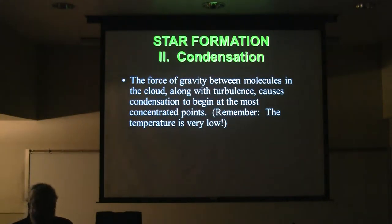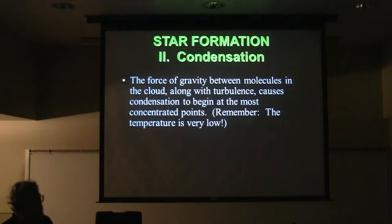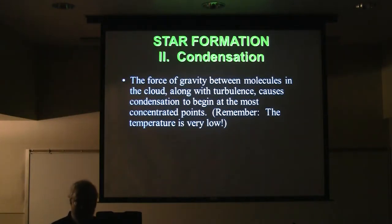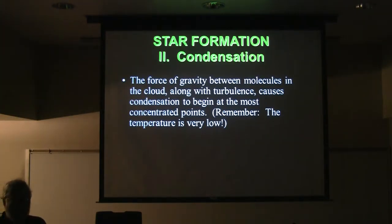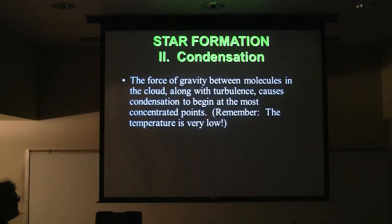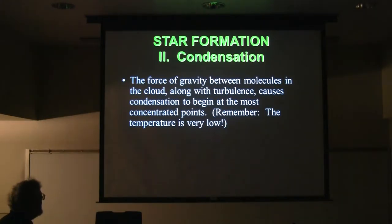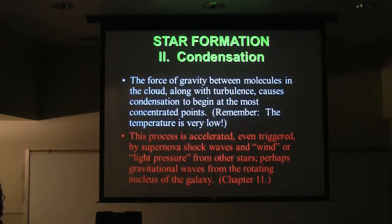The force of gravity causes particles — gas molecules, dust particles — to get closer and closer together. According to Newton's law of gravitation, the force between any two objects is proportional to the mass of each one and inversely proportional to the distance between them, squared. So every particle attracts every other particle. If that causes them to move closer together, the attraction gets stronger because the distance in the denominator decreases — making the attraction even greater. It's a runaway process. At very low temperature, there's not much around to disperse the particles, so they clump together.